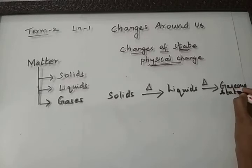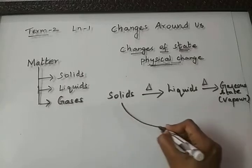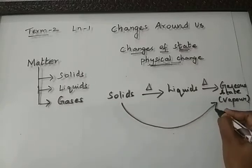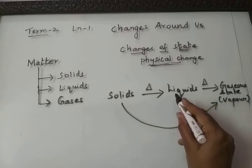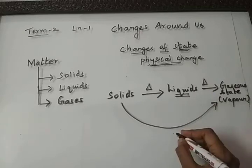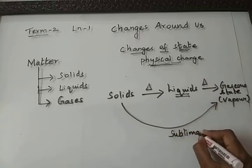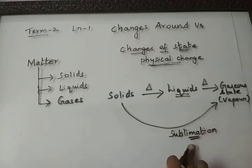Certain solids like camphor and naphthalene will get converted from solid directly to gaseous state without getting converted to liquid state. That is, without melting they will directly move to the gaseous state, and we know that the process is called sublimation. We have learned about sublimation in detail in sixth standard.